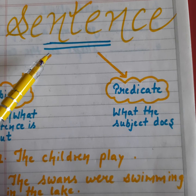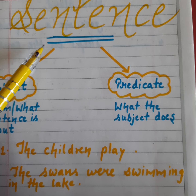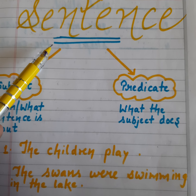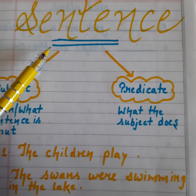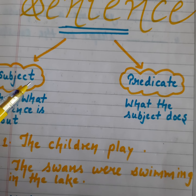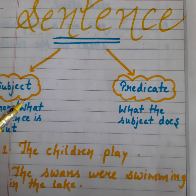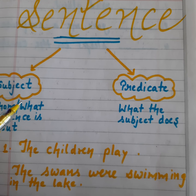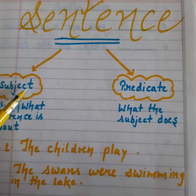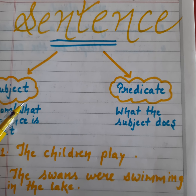A group of words that makes a complete meaning and gives us a sense is called a sentence. Yesterday I told you about sentences and their parts. Now, subject and predicate are the two parts of a sentence — one is subject and the other is predicate.